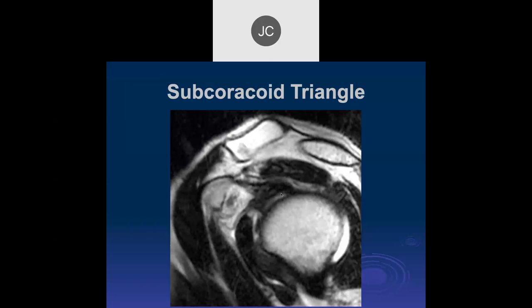Looking again at the subcoracoid triangle, there's effacement of that fat and posteriorly we see a thickened capsule, obliterating the margins of the coracohumeral ligament. Part of the symptoms may relate to adhesions to the long head of the biceps tendon. So the findings to look for are: effacement of fat in the rotator cuff interval, thickening of the inferior capsule and middle glenohumeral ligament, and paucity of fluid in the joint space. It's still primarily a clinical diagnosis, but these MRI findings are quite common and were often under-diagnosed in earlier years.